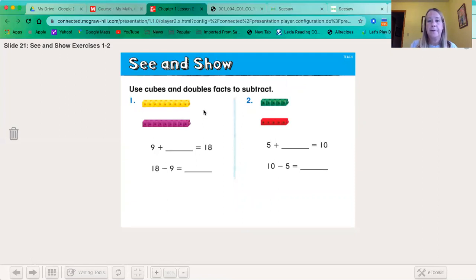So if there are nine here and we know nine plus nine equals 18, this would be nine plus nine equals 18, or 18 minus nine equals nine. Same thing over here. Five plus five equals 10. So 10 minus five equals five.